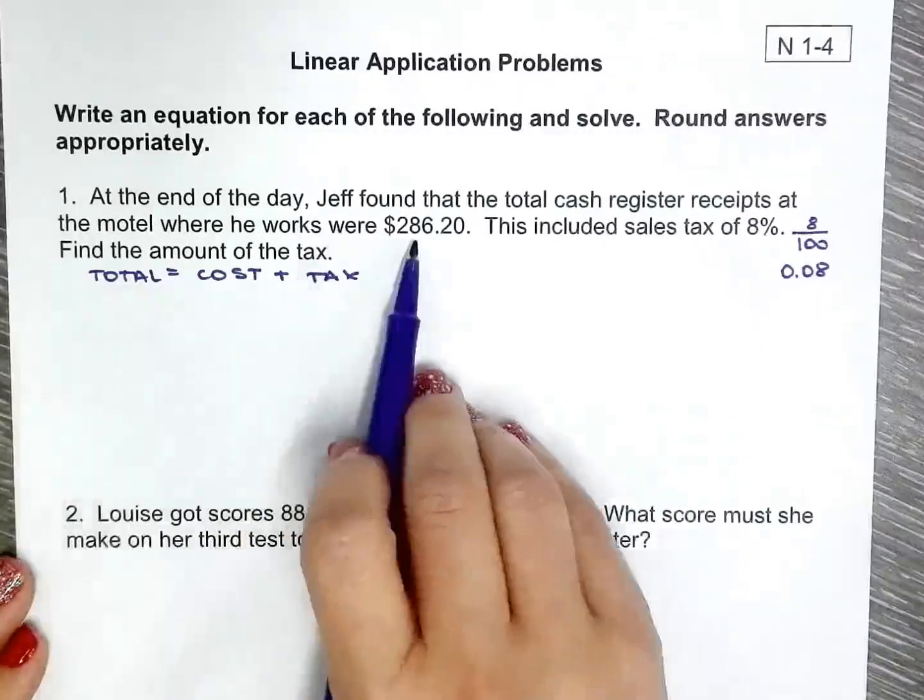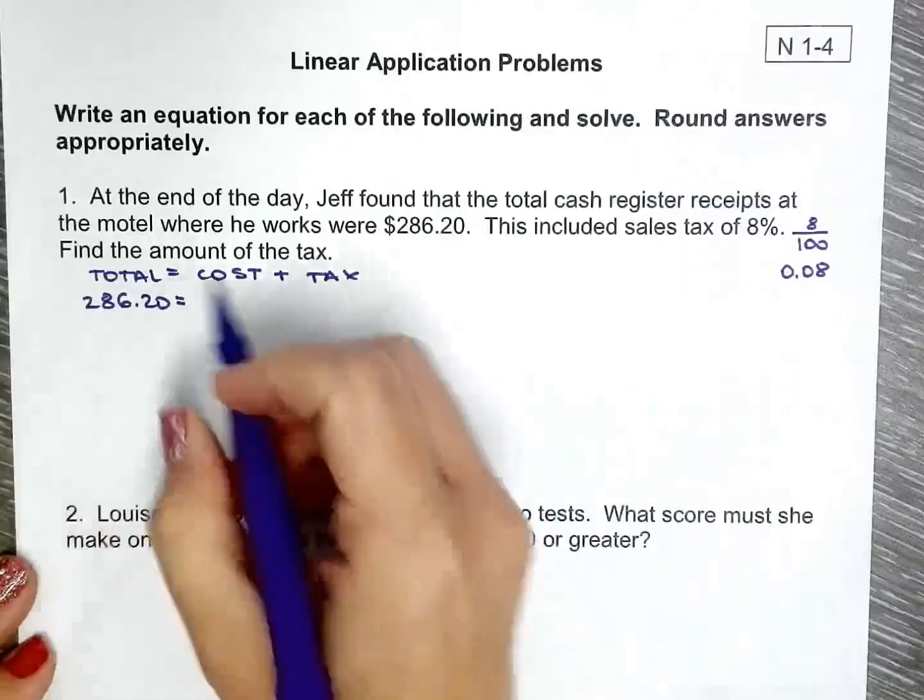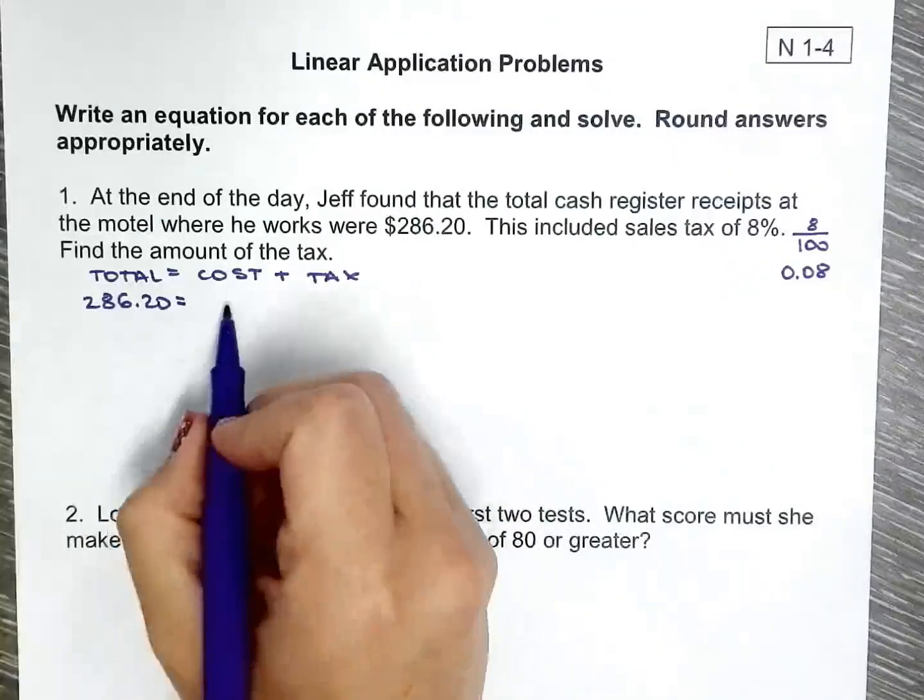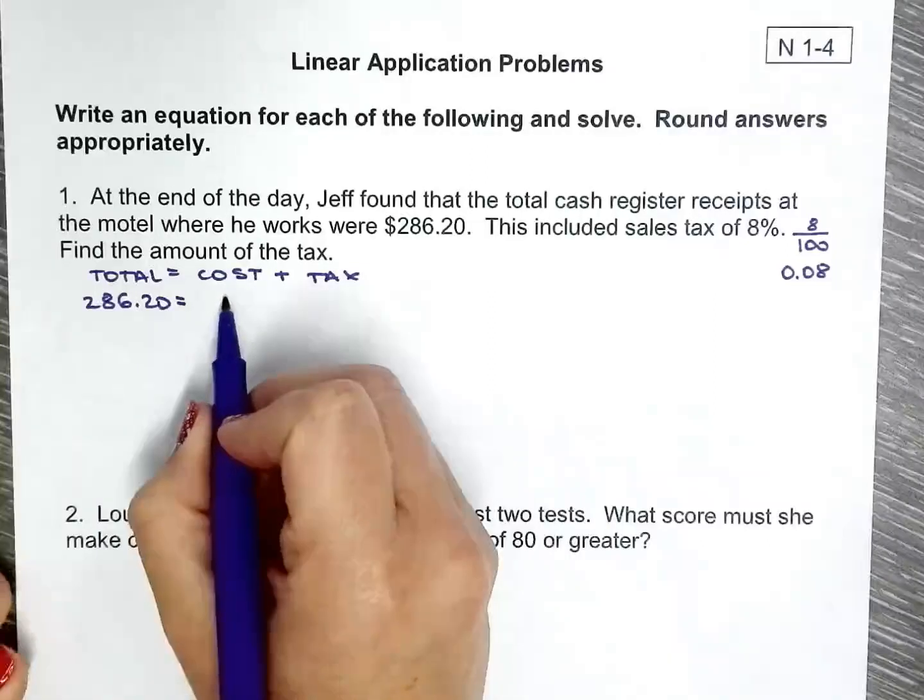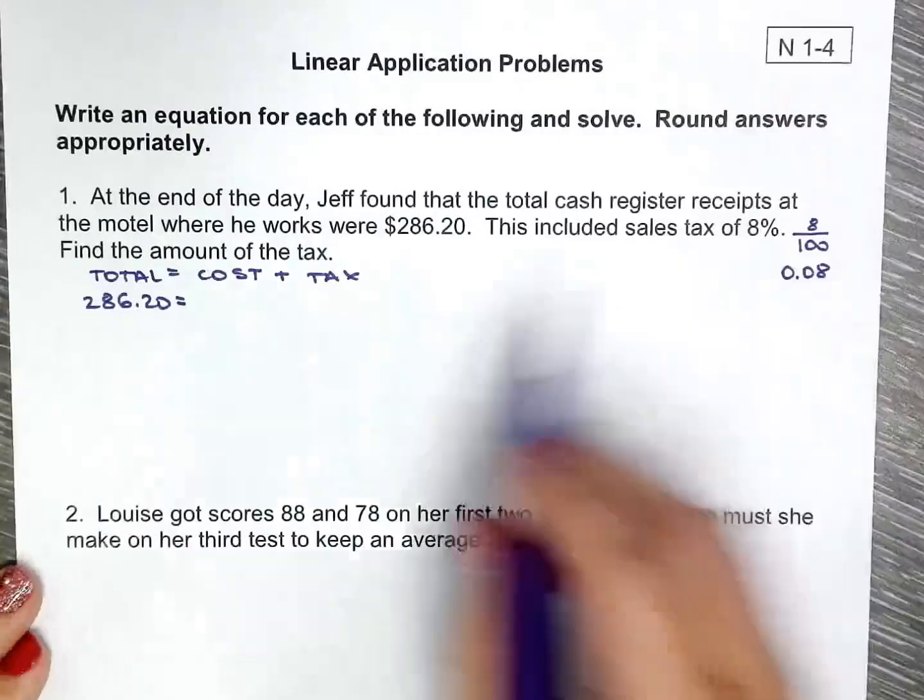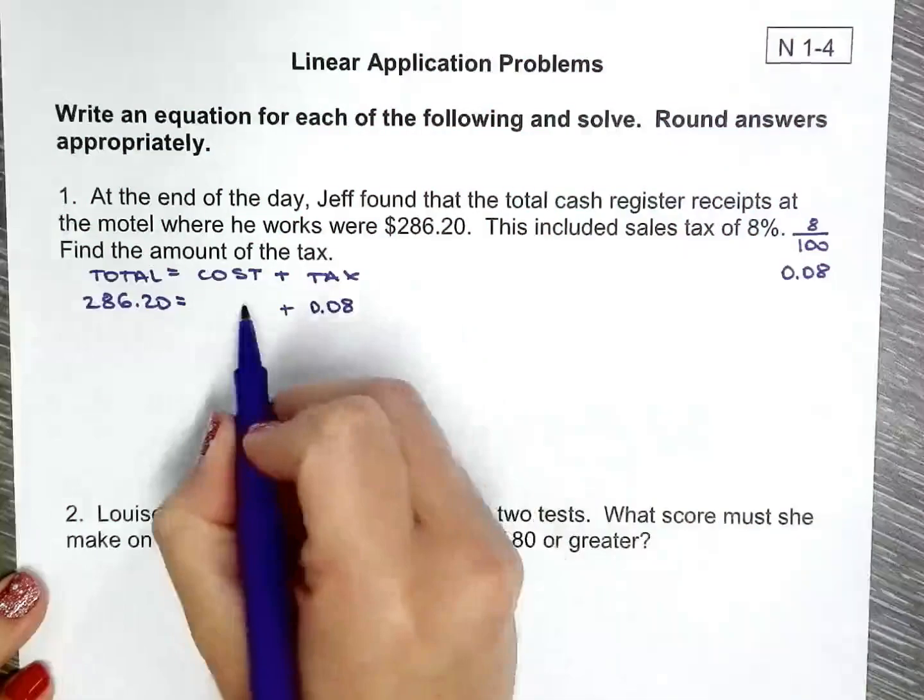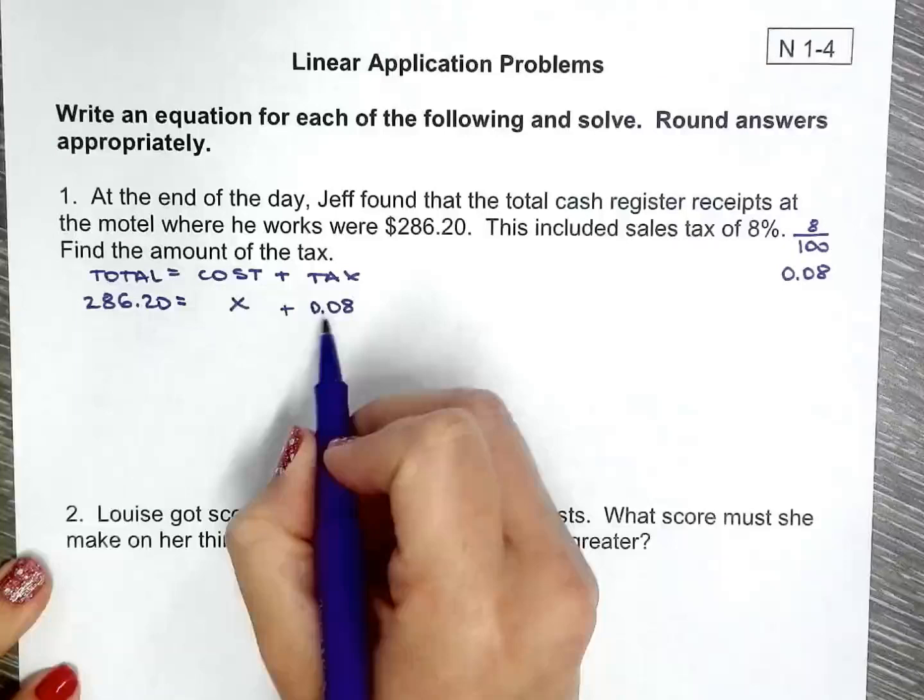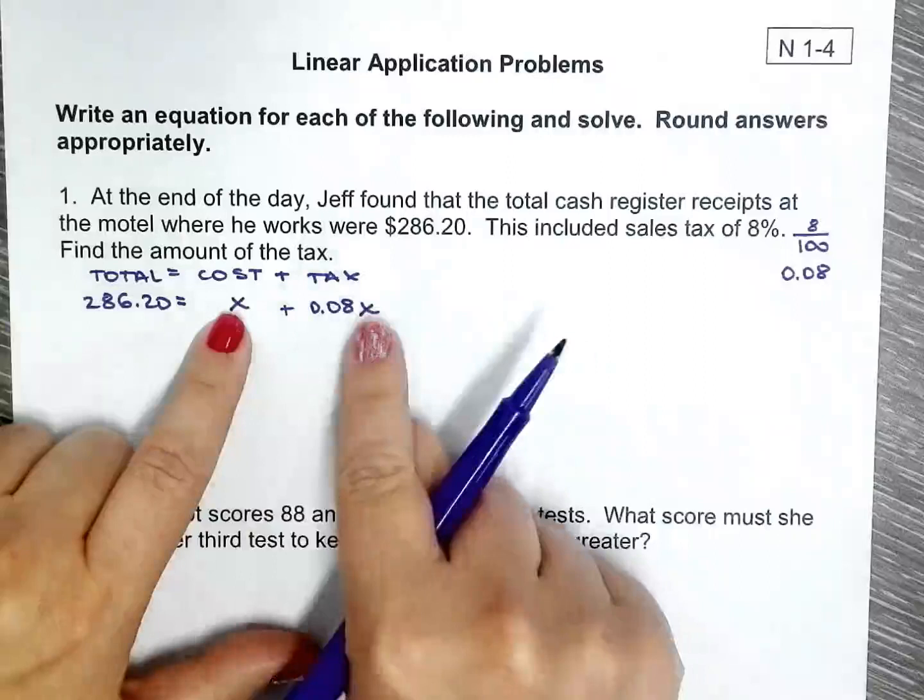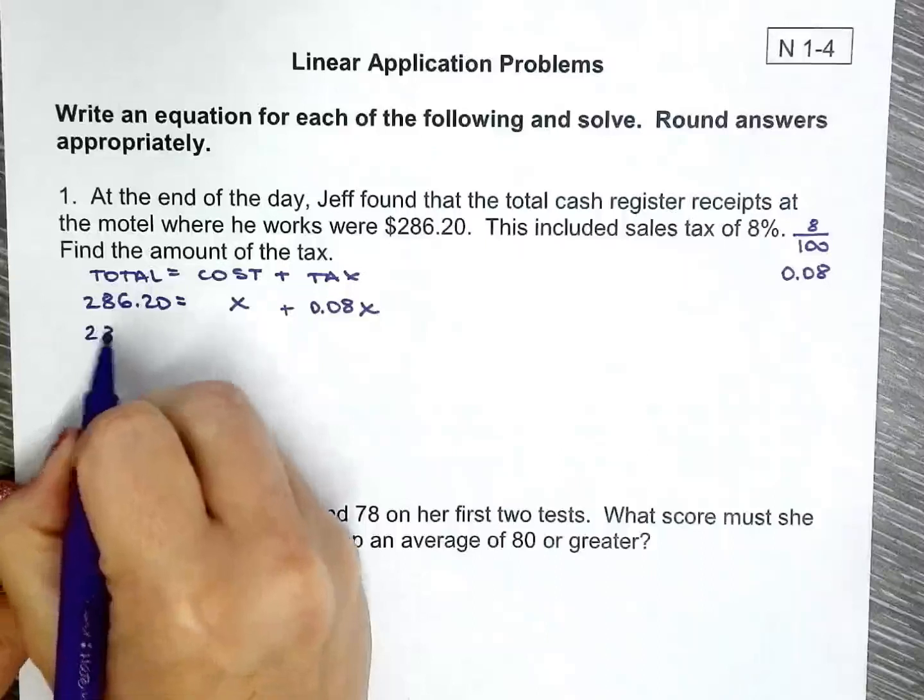We know that the total cost will be the cost of the room plus tax. The total was $286.20 because it says right there. We're trying to figure out the cost so we can figure out the tax. Tax is a percentage of the cost, 8% of whatever the cost is. Now we can start solving.